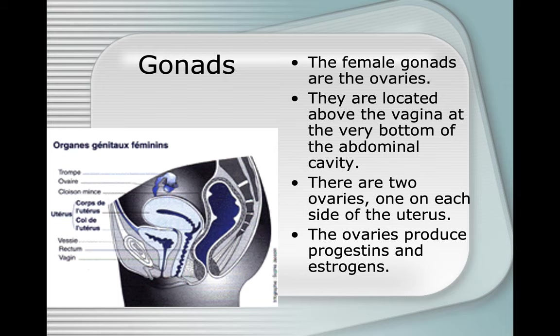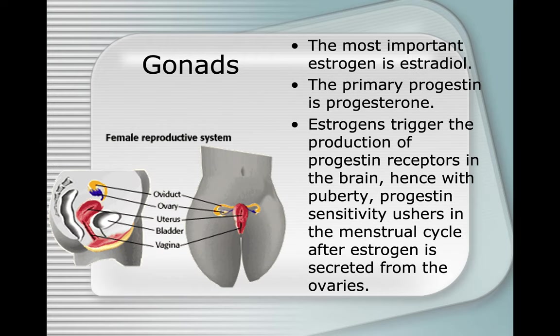The female gonads are the ovaries, located above the vagina at the very bottom of the abdominal cavity, one on each side of the uterus. The ovaries produce progestins and estrogens. The most important estrogen is estradiol. The primary progestin is progesterone. Estrogens trigger the production of progestin receptors in the brain, and with puberty, progestin sensitivity ushers in the menstrual cycle after estrogen is secreted from the ovaries.